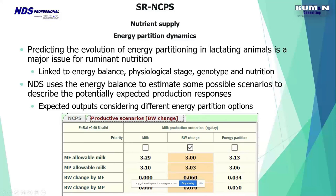When 'energy partition' is selected, the system partitions extra energy to both milk and growth/reserves simultaneously — meaning both milk yields and body weight or reserve replacement will increase. The proportion of this partition between milk and body reserves depends on diet quality: the higher the quality of the diet, the greater the proportion that goes to reserves rather than milk yield.